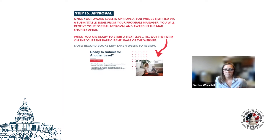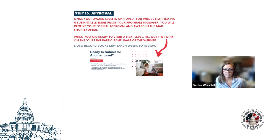Once an application is approved, participants will be notified via email. They can also check the status of their application at any time by logging into their Submittable account. Once they're ready to begin another level, they'll go to the current participants page of our website and request a link to their new application, and they'll receive a link to the specific level that they've requested. The four to six week timeline for review is still currently in place, and six to eight weeks for gold medals.